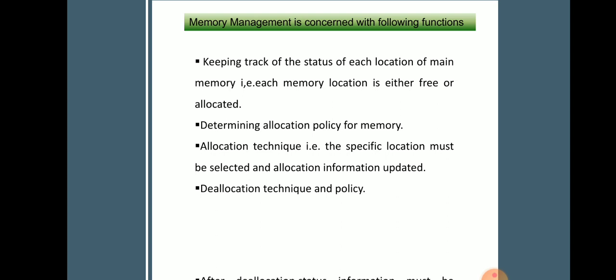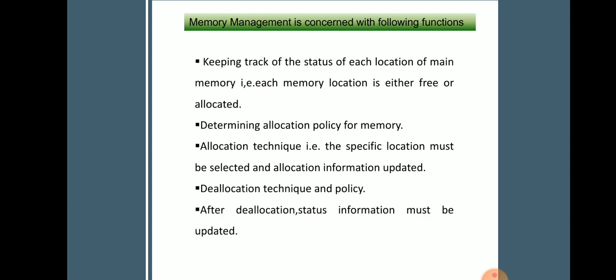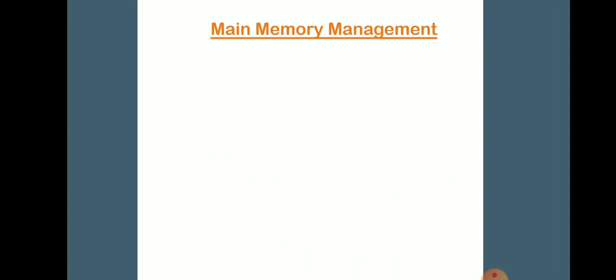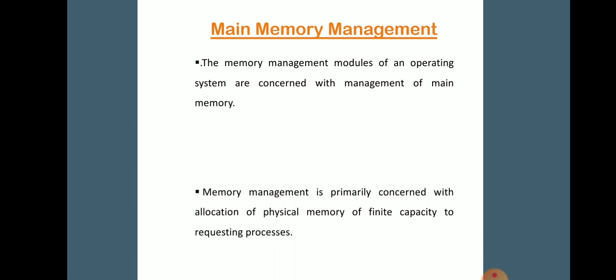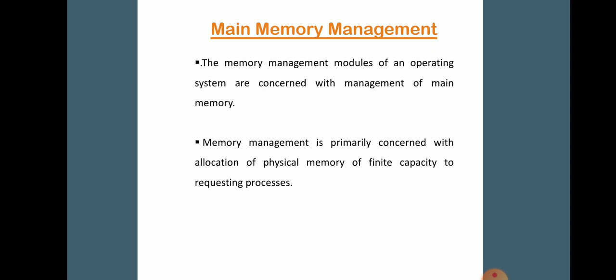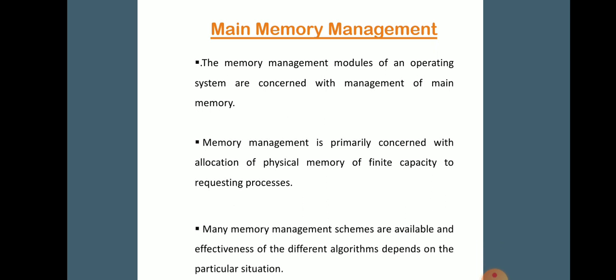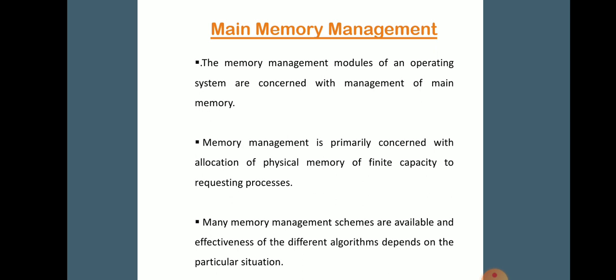The allocation technique is used after allocation — the status of information must be updated. Main memory is primarily concerned with allocating physical memory of finite capacity to requesting processes. The overall resource utilization and performance of a computer are affected by the performance of main memory management. The effectiveness of different algorithms depends on the particular situation.